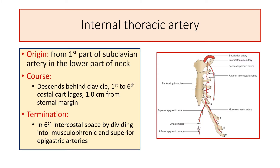The internal thoracic artery takes origin from the first part of the subclavian artery in the lower part of the neck, that is the root of the neck, and descends medially behind the sternal end of the clavicle and the first costal cartilage.